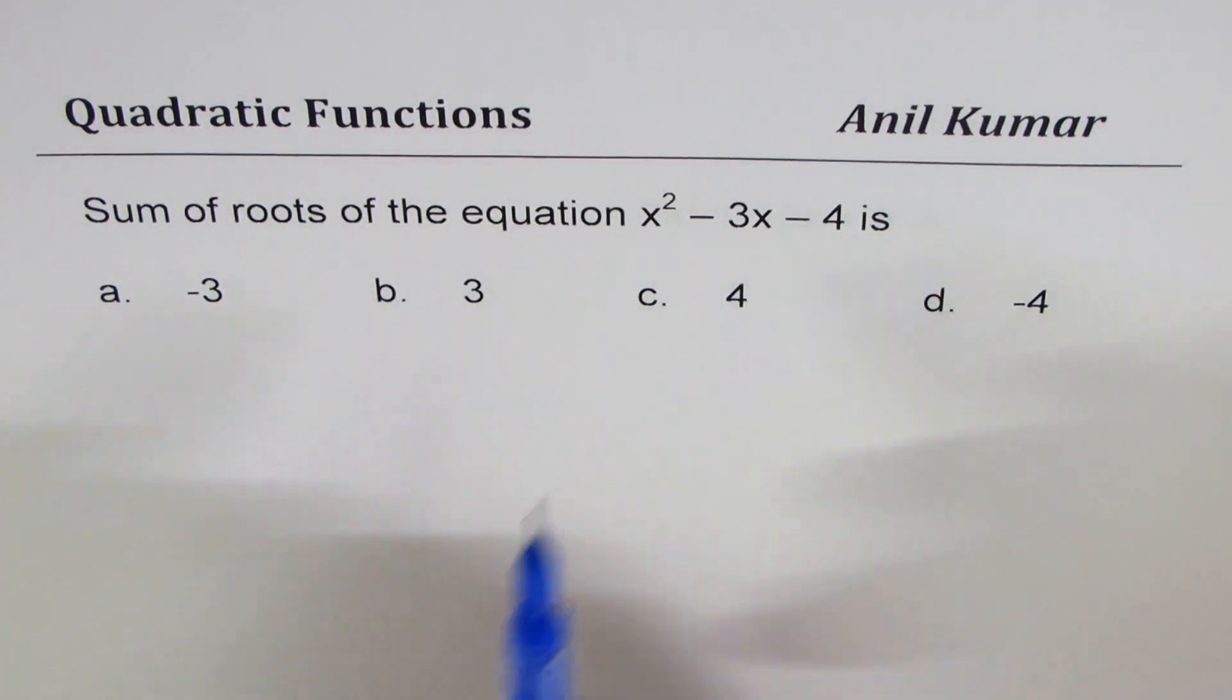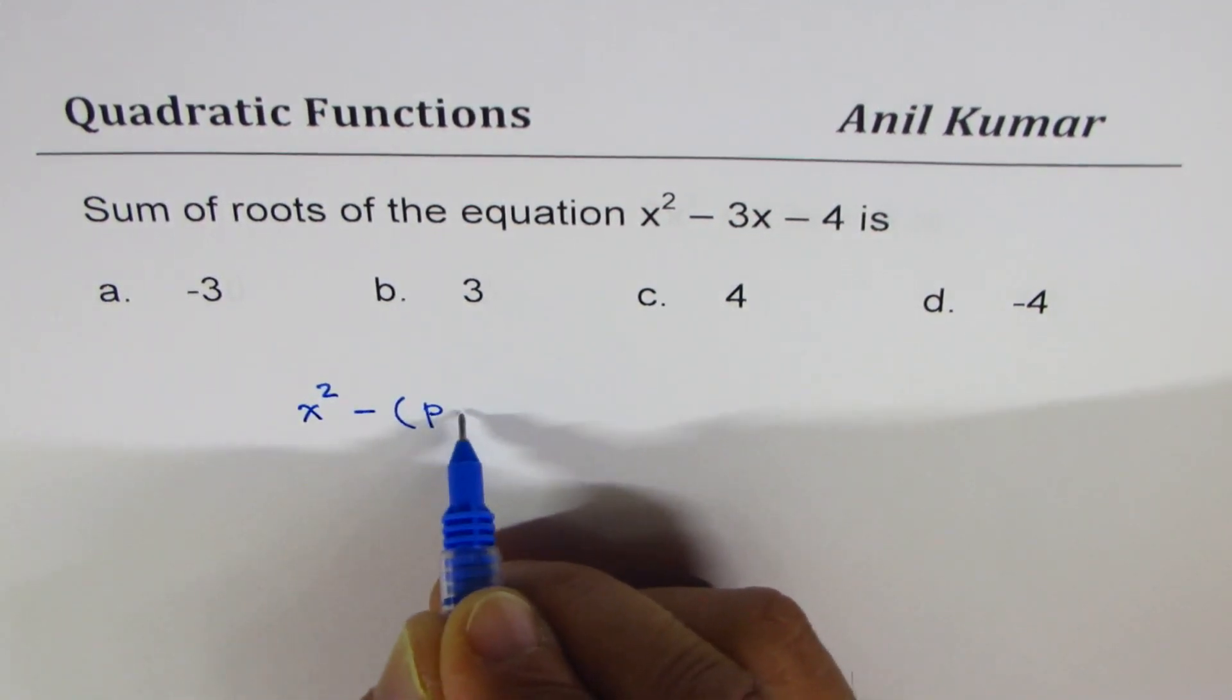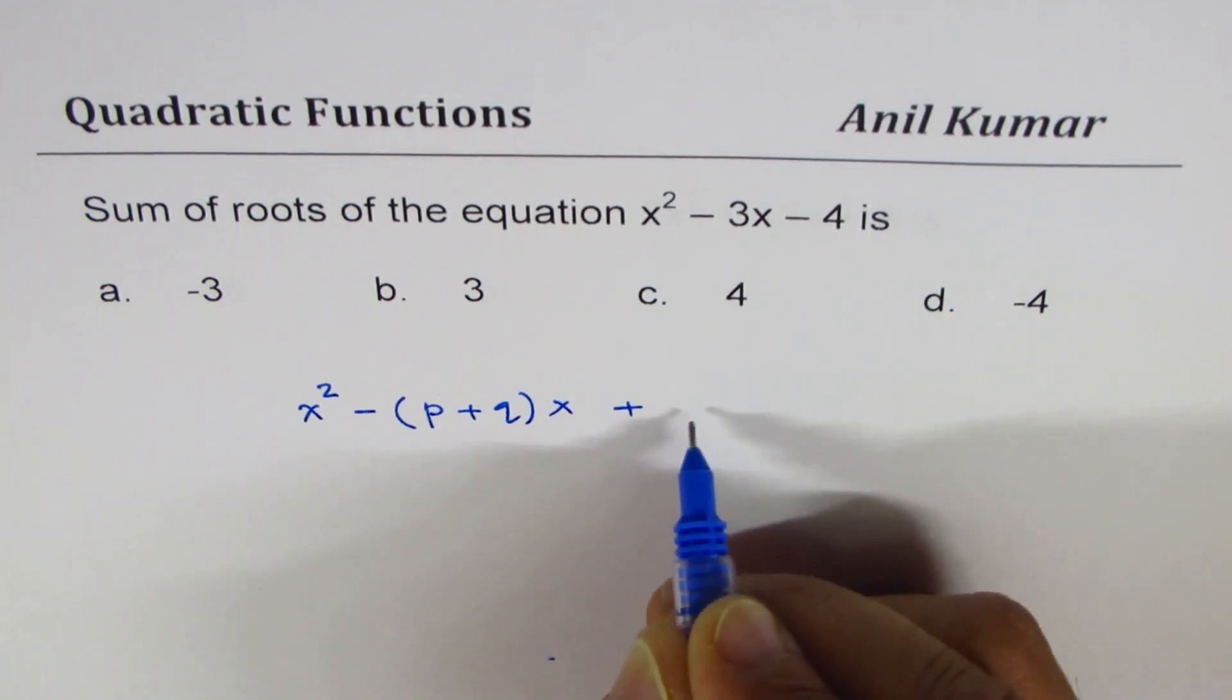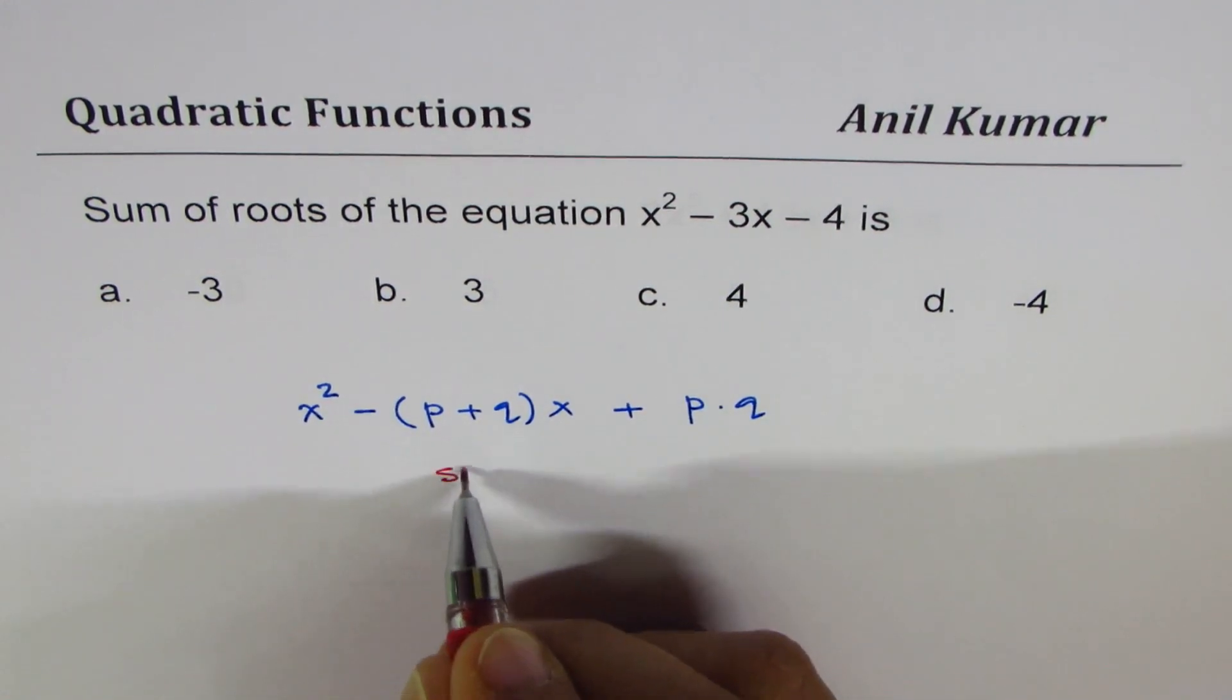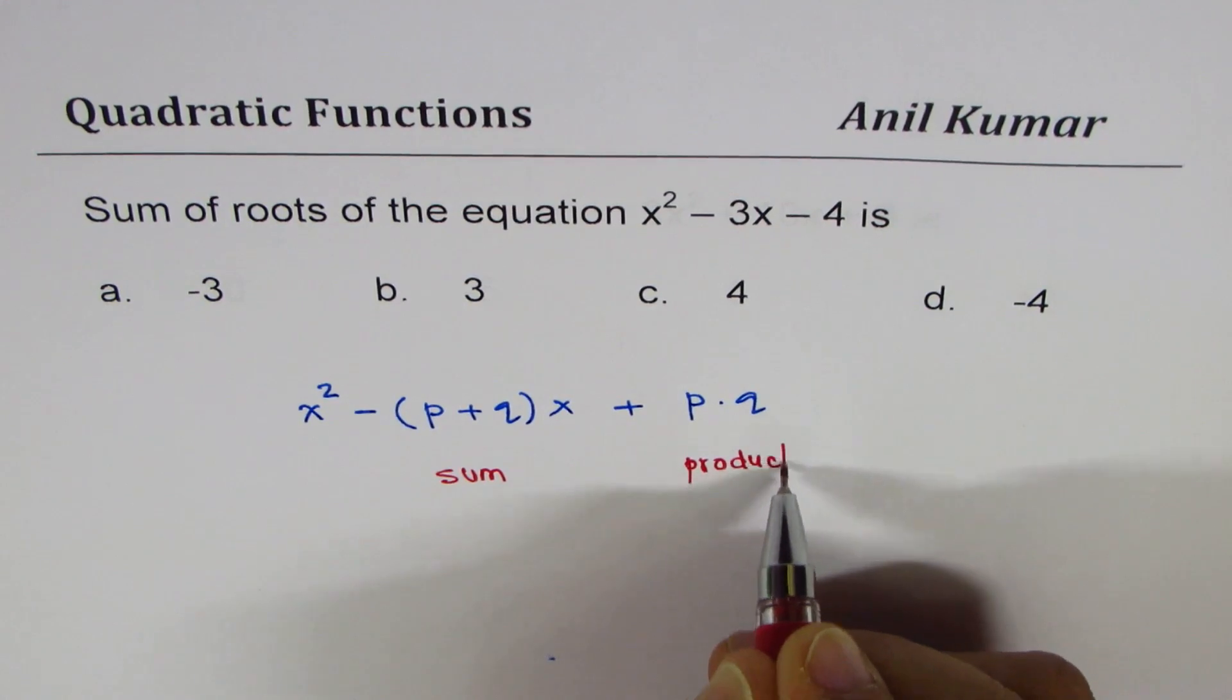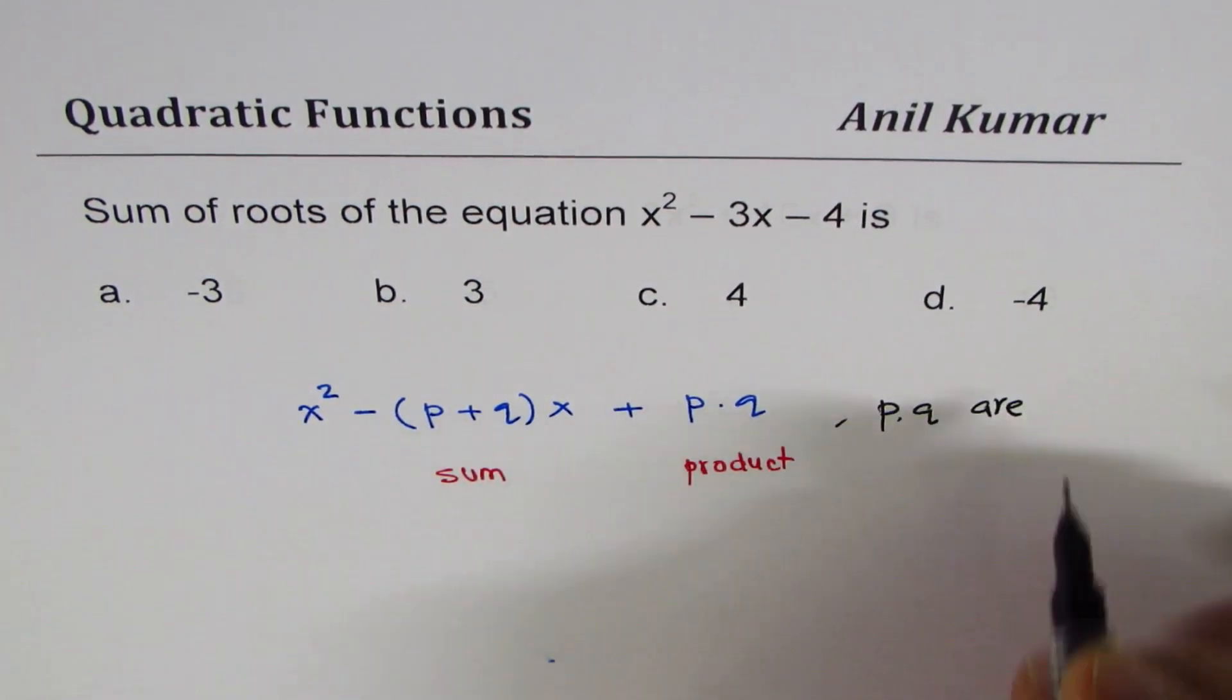Now generally if you write a quadratic equation it could be written as x squared minus p plus q times x plus p times q, right. That is what we call sum and product. This is sum and this is product.